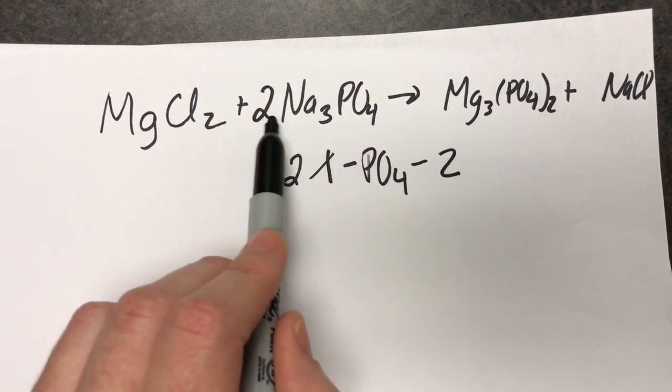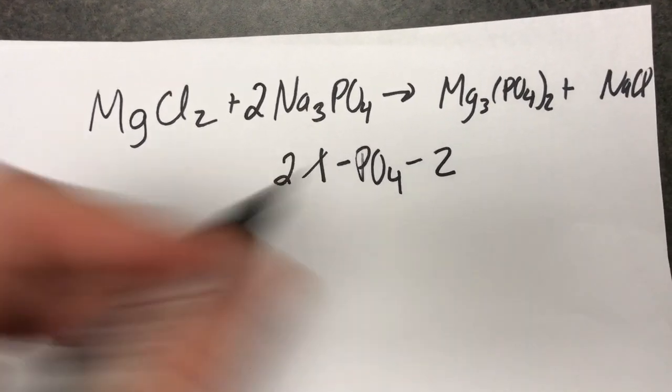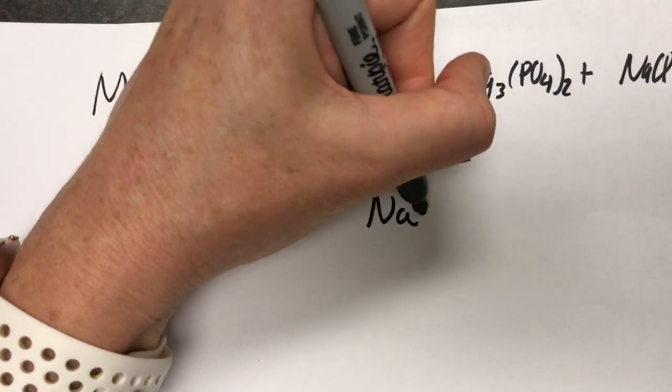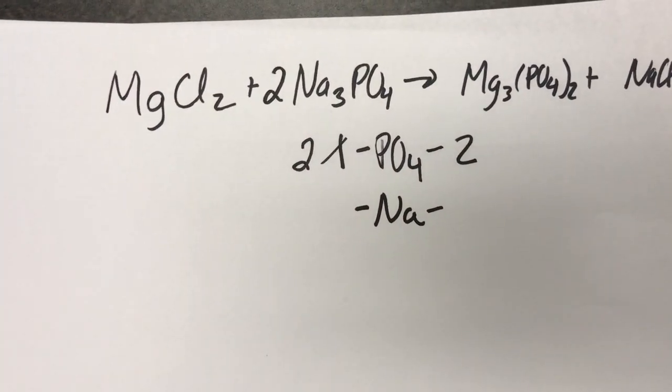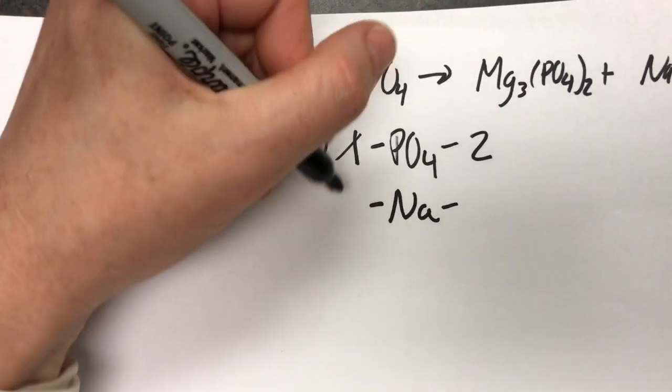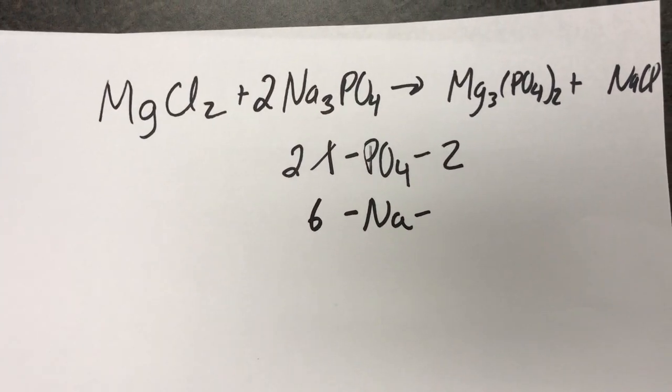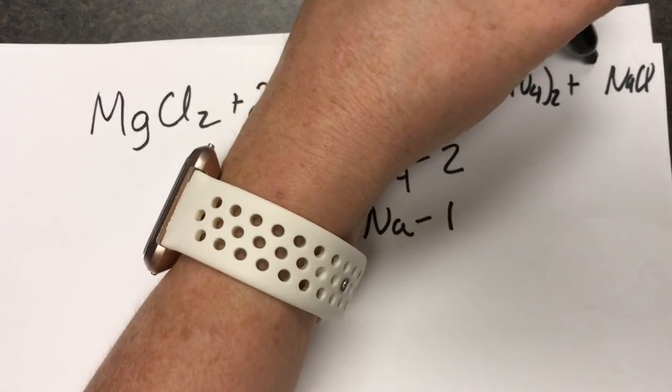Maybe you notice that now you change the number of sodiums, so this is a bigger point of difference. So let's go ahead and change that. On my left hand side I have six. On my right hand side I have one. Six divided by one is six.